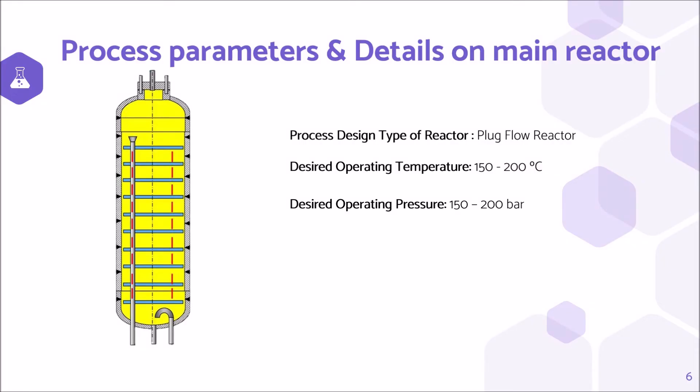In the urea synthesis process, the conversion of carbon dioxide into urea determines the material consumption. In order to improve the conversion of CO2, the structure of the urea reactor plays a significant role. Liquid NH3 and gaseous CO2 are both fed from the bottom of the reactor, generating an upward movement of the phases to react and produce urea.